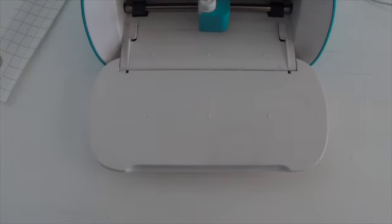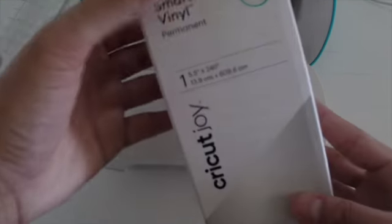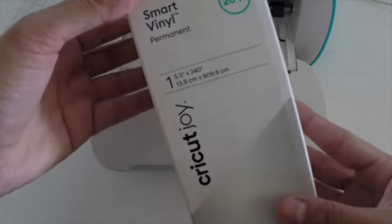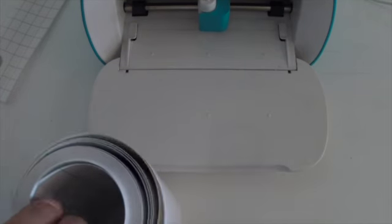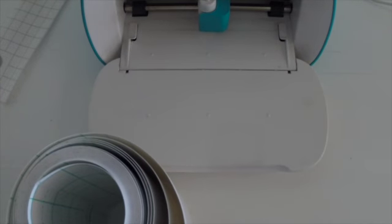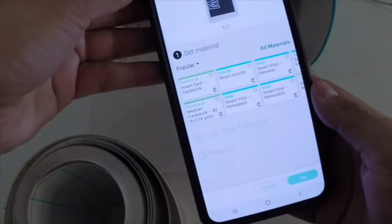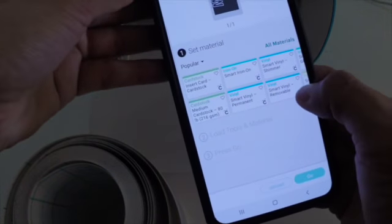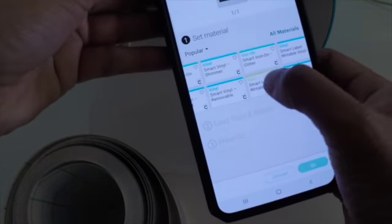Next, I take out my Cricut Joy and some smart permanent vinyl. With this, I'll be cutting out the word 'math' to put at the top of my notebook. Since it's just a simple cutout, I'm just going to use the Cricut app on my phone.